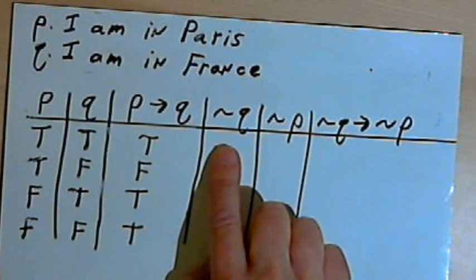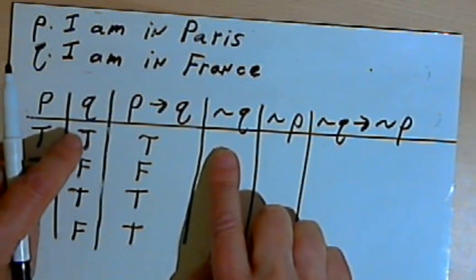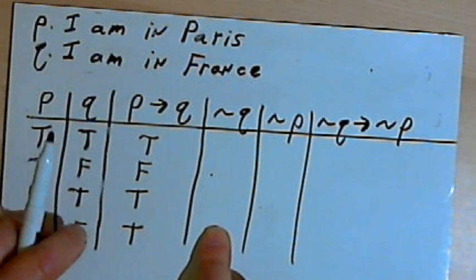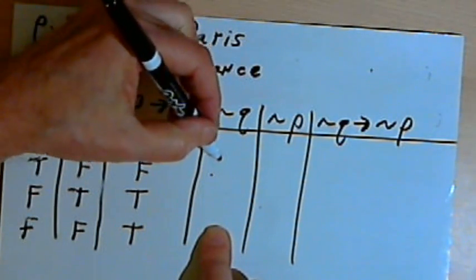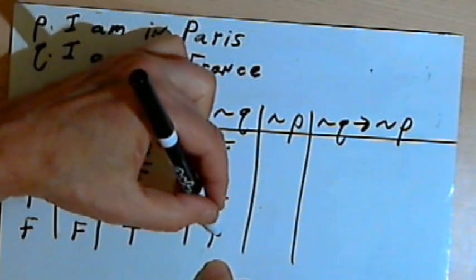So let's see what happens with the contrapositive. Well, first we have to fill in not Q. So not Q is going to be the opposite of the Q column, since the Q column was true, false, true, false. For not Q, I want false, true, false, true.